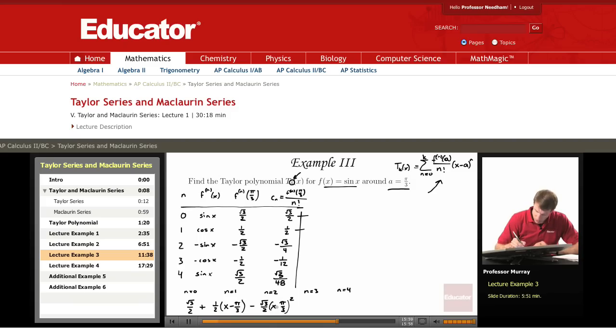n equals 3 gives us -1/12 times (x minus π/3) cubed, plus √3/48 times (x minus π/3) to the 4th power.